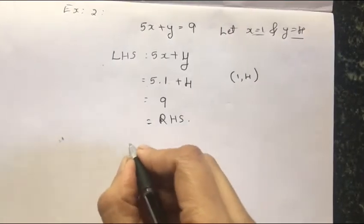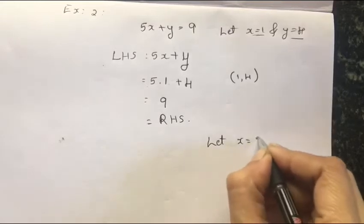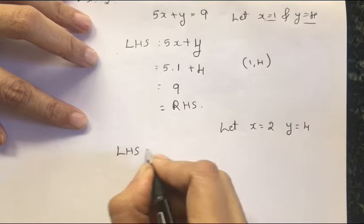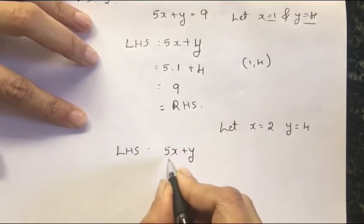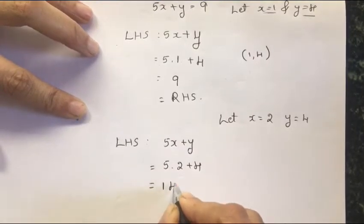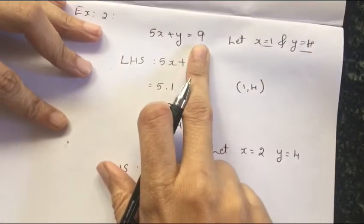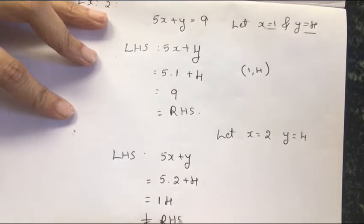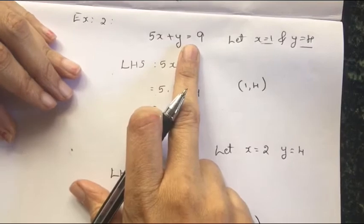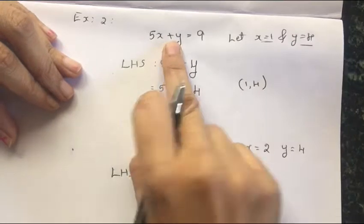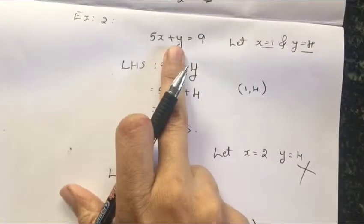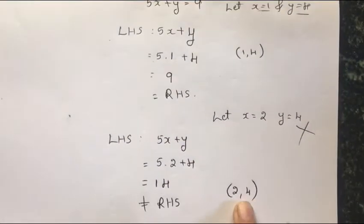Suppose instead I let x equal to 2 and y equal to 4. Then the left-hand side is 5 into 2 plus 4, which is 10 plus 4, giving 14. This is not equal to the right-hand side value of 9. So the point (2, 4) does not lie on the line 5x plus y equal to 9. Since the left-hand side is not equal to the right-hand side, this is not a solution. Geometrically, this point does not lie on this line.